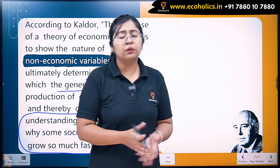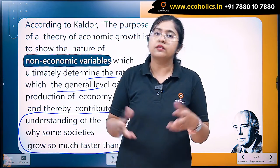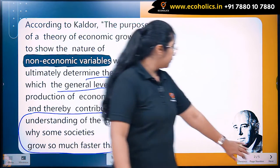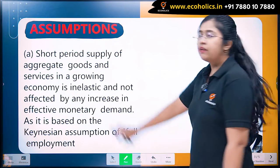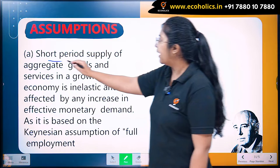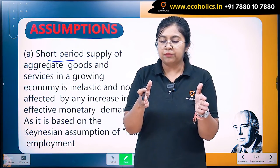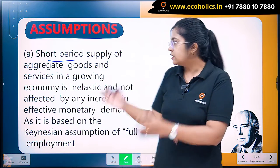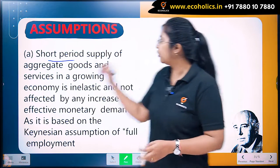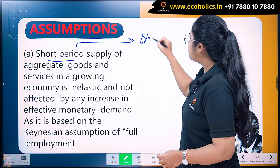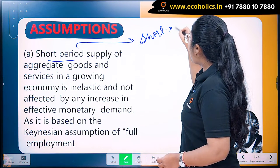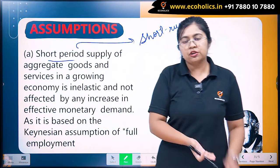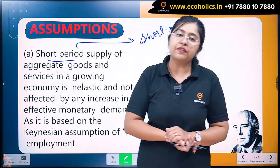Like every other growth and development theory, this theory is based on certain assumptions. The very first assumption concerns the short period. The period of development considered by Kaldor is the short period, or short run — a concept also taken from the Keynesian growth model. Short period supply of aggregate goods and services in a growing economy is inelastic and not affected by any increase in effective monetary demand.